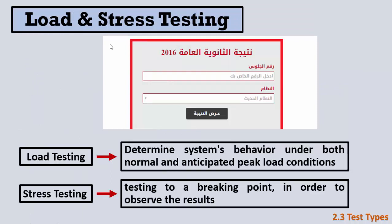The first type of non-functional testing is performance testing, which divides into load testing and stress testing. For example, a university website showing student grades: during testing only one person accessed it, but in real life 900 out of 1000 registered students might log in simultaneously. Load testing cares about anticipated peak load conditions — testing at 800 or 900 concurrent users to check if the system performs well.